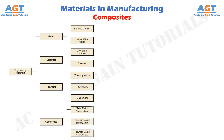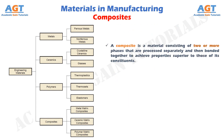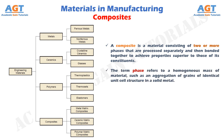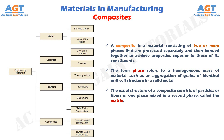Composites do not really constitute a separate category of materials; they are mixtures of the other three types. A composite is a material consisting of two or more phases that are processed separately and then bonded together to achieve properties superior to those of its constituents. The term phase refers to a homogeneous mass of material. The usual structure of a composite consists of particles or fibers of one phase mixed in a second phase, called the matrix. Composites are found in nature — for example, wood — and they can be produced synthetically. Synthesized types include glass fibers in a polymer matrix such as fiber reinforced plastic, polymer fibers in a matrix of a second polymer such as an epoxy kevlar composite, and ceramic in a metal matrix such as tungsten carbide in a cobalt binder to form a cemented carbide cutting tool.